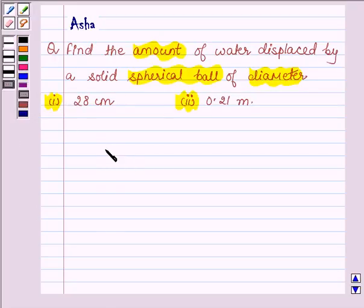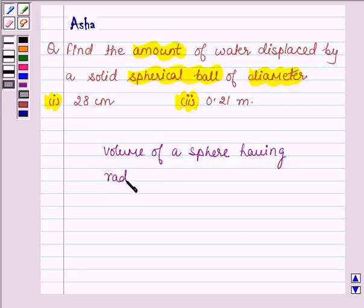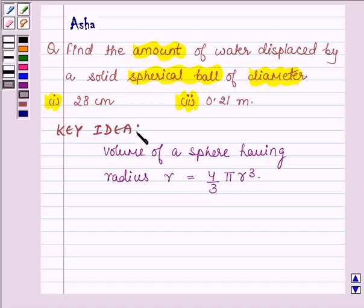So first let us learn the formula to calculate the volume of a sphere having radius r units. This is given by 4 upon 3 into π into r cube. So with the help of this formula we are going to solve the above problem. So this is our key idea.